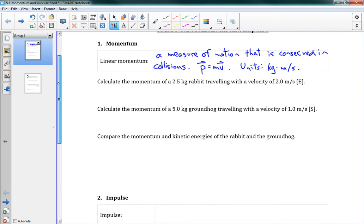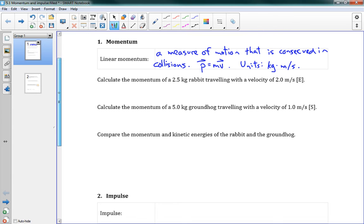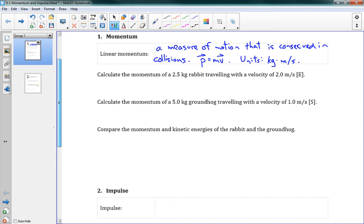This becomes really useful for looking at any time that two things hit each other, or even just when a single object is moving. So we're going to do these problems here. Calculate the momentum of a 2.5 kg rabbit traveling with a velocity of 2.0 meter per second east. Well, we've got p equals mv, and we've got 2.5 times 2.0, and this gives us 5.0 kilograms meter per second, again in the same direction east.